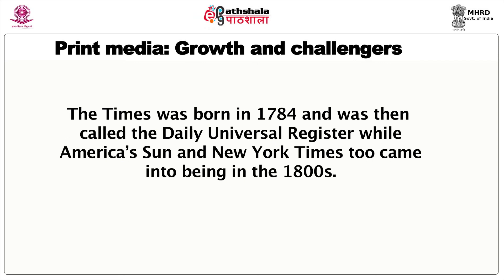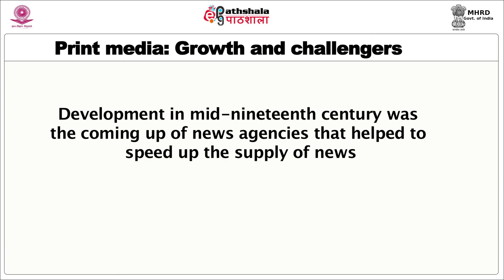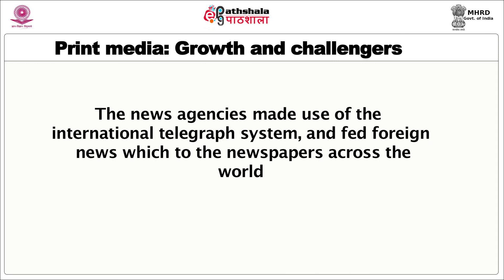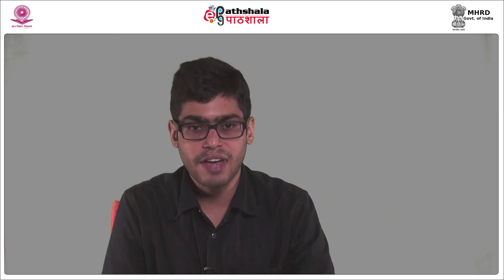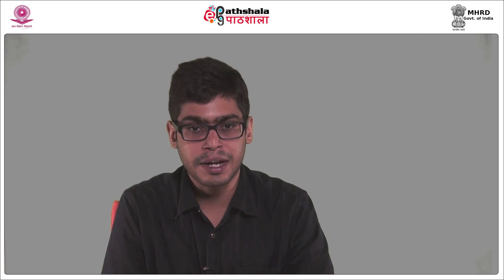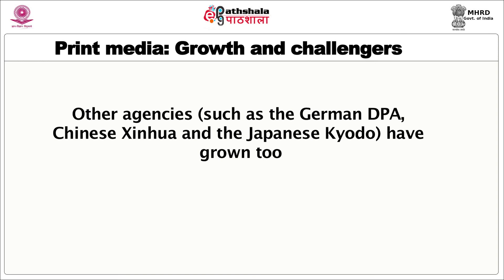The greatest newspaper of England, The Times, was born in 1784 and was then called the Daily Universal Register, while America's Sun and New York Times also came into being in the 1800s. The major development in the mid-19th century was the coming up of news agencies that helped speed up the supply of news. These agencies made use of the international telegraph system and fed foreign news to newspapers across the world. Agencies like the Associated Press, Reuters, AFP and ITAR-TASS extended their operations to several countries, with other agencies such as the German DPA, Chinese Xinhua and Japanese Kyodo growing too.